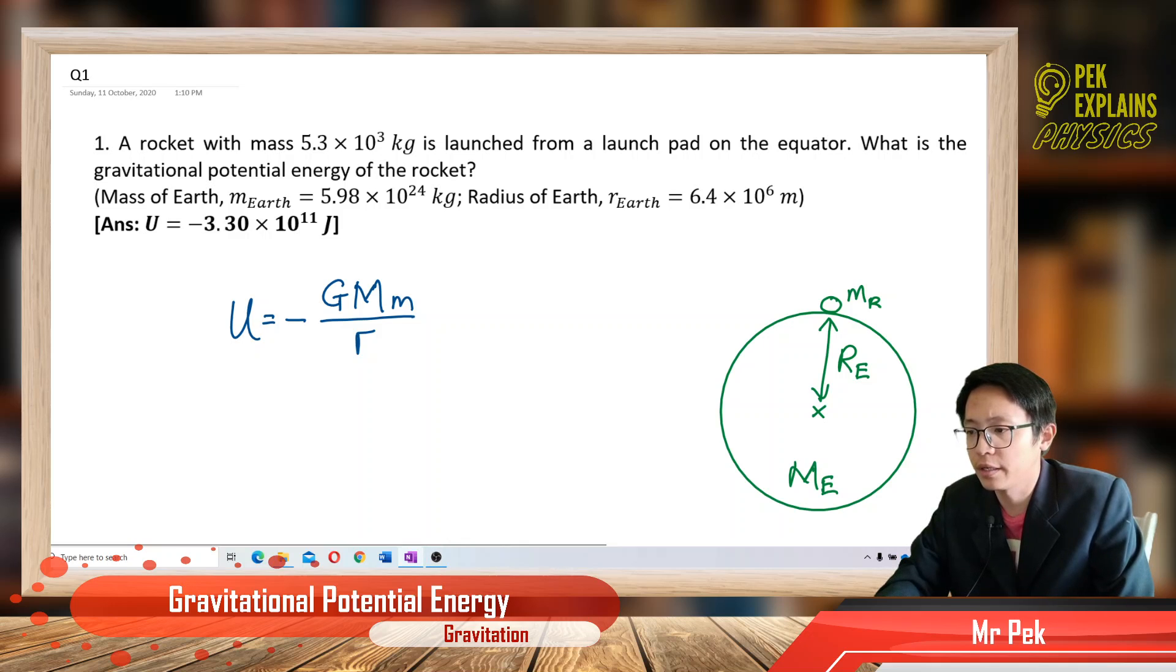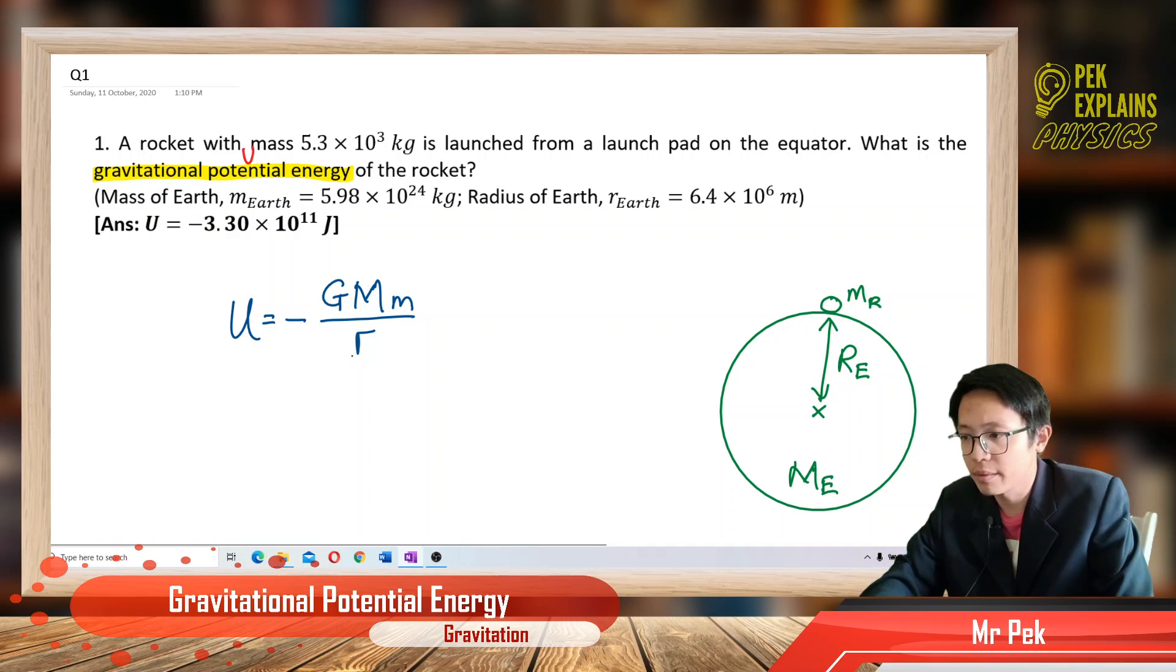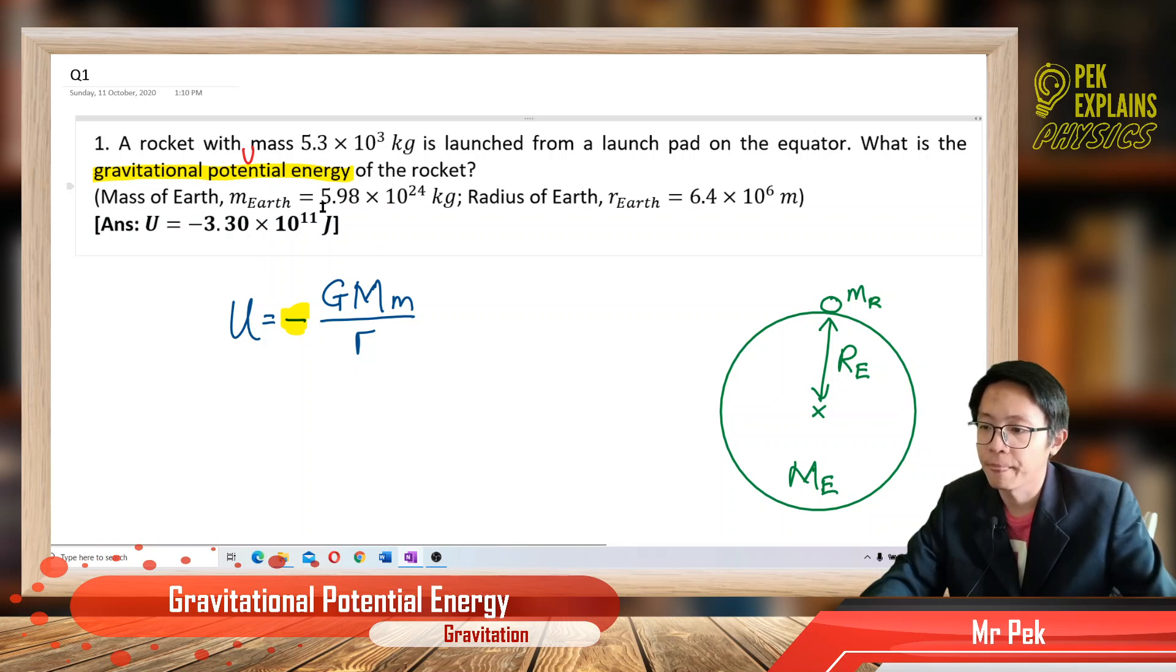The question asks to find the gravitational potential energy. The symbol of gravitational potential energy is U. So the formula is U equals negative GMm over R. Remember, for gravitational potential energy, you must put a negative sign. This is very important.